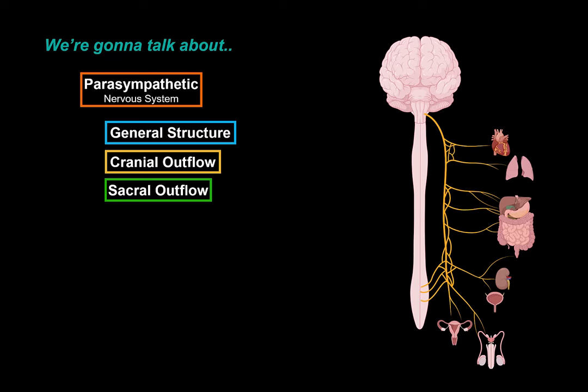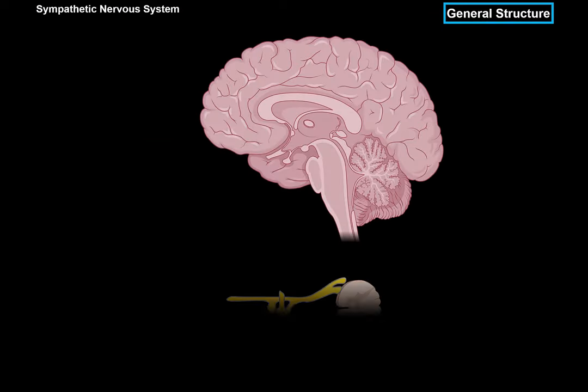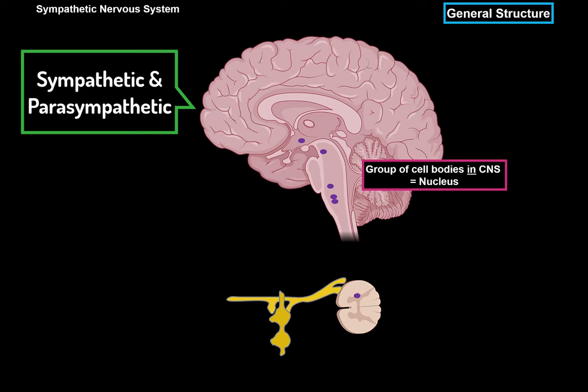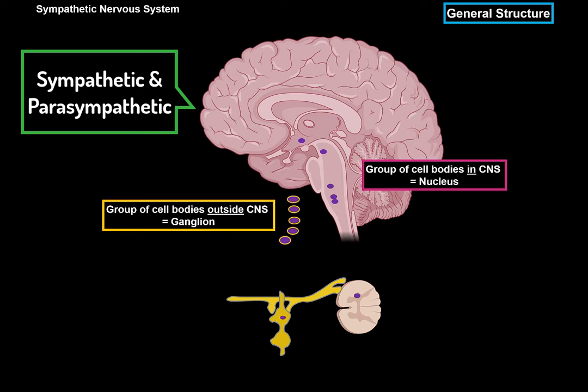So let's start with some terms. The autonomic nervous system — both the sympathetic and the parasympathetic — is made up of a relay that includes two neurons. When there's a group of nerve cell bodies next to each other within the central nervous system, the whole thing is called a nucleus. While a group of nerve cell bodies located outside of the central nervous system is called a ganglion.